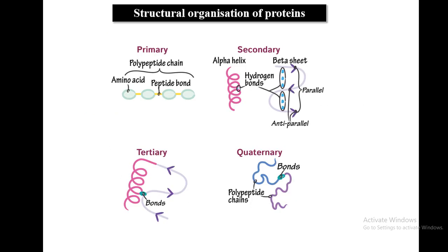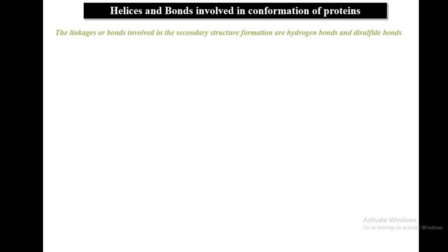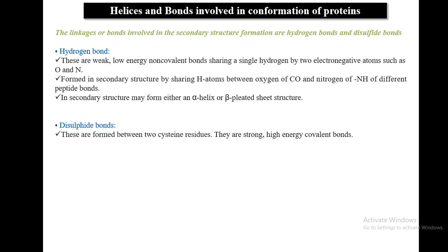Structural organization of proteins: there are four levels — primary, secondary, tertiary, and quaternary structure. The primary structure contains the sequence of amino acids. The bonds involved in secondary structure formation are hydrogen bonds and disulfide bonds. Disulfide bonds form between two cysteine residues — they are very strong, high-energy covalent bonds.